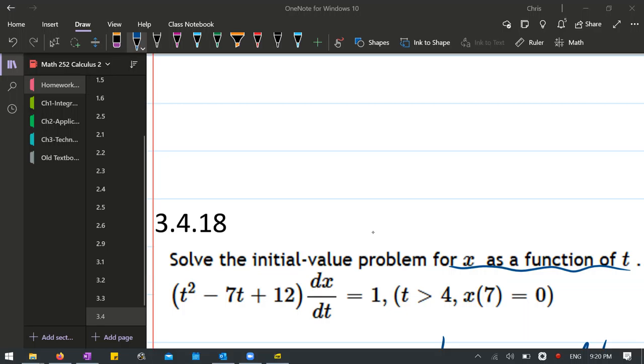We're gonna solve an initial value problem here. This is in the partial fractions section and it may not look like a partial fractions problem initially, but it will turn into partial fractions. First thing we're gonna do is get all the x's on one side and all the t's on the other side.